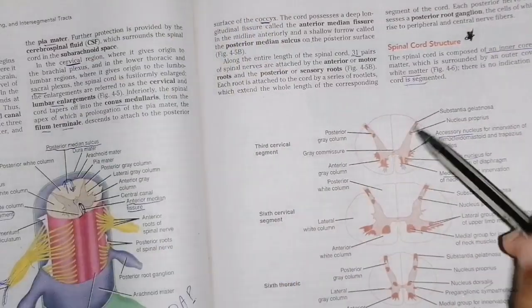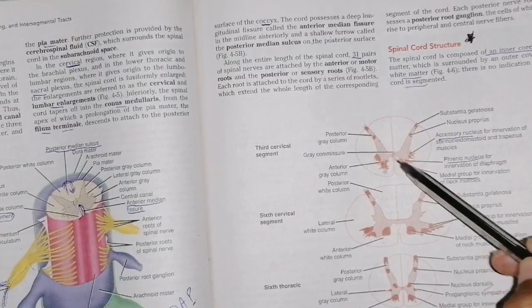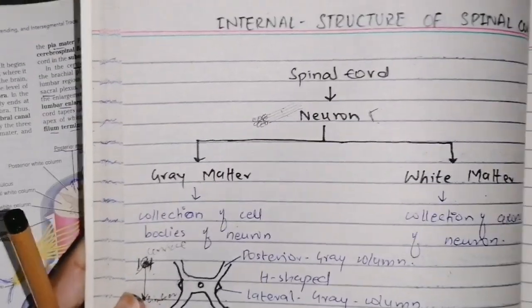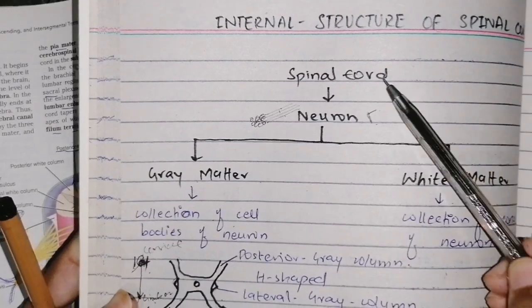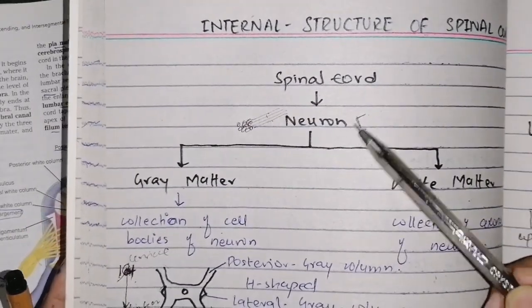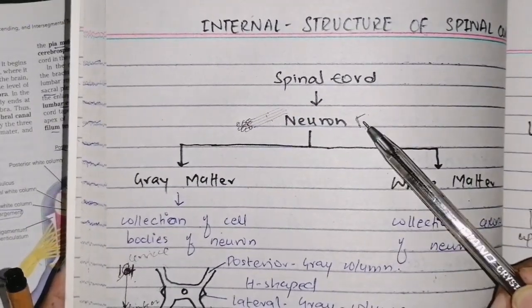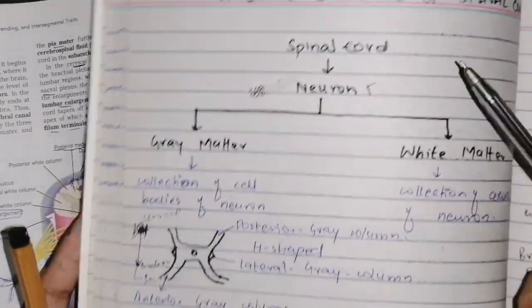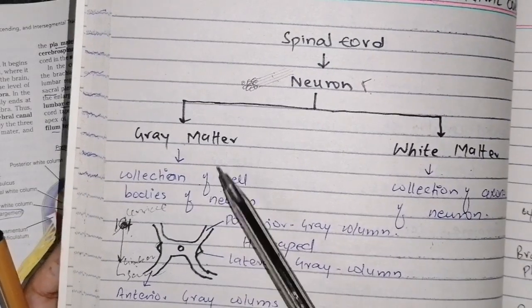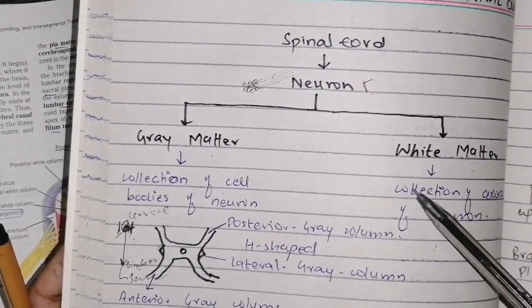Regarding internal structure, you have to remember two things. One, the inner core is gray matter and the outer core is white matter. As we know, the functional unit of the spinal cord is the neuron. Neurons have two parts: cell body and processes. This collection of cell bodies is gray matter.